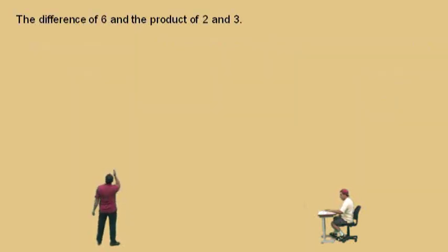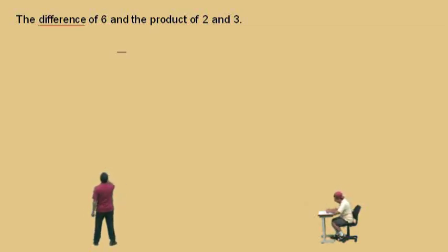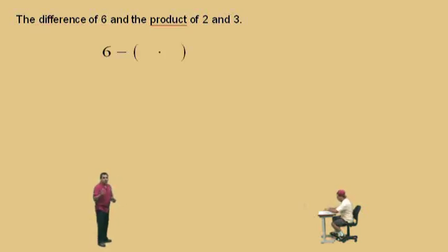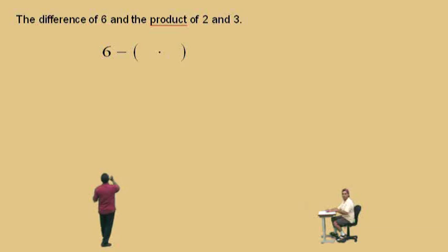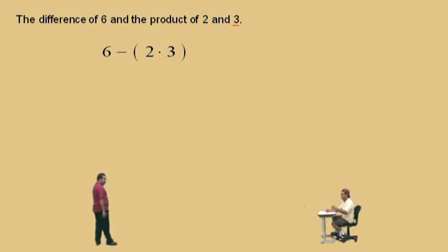Let's step it up a bit. We have the difference of 6 and the product of 2 and 3 — don't get scared, just read and translate. We have a difference — what does 'difference' mean? Subtraction. We have our subtraction now. What are the two things we're subtracting? 6 and the product. The product of what two things, Charlie? 2 and 3. Very nice — the 2 and the 3, and there you go. That's your answer. That was a tough one!